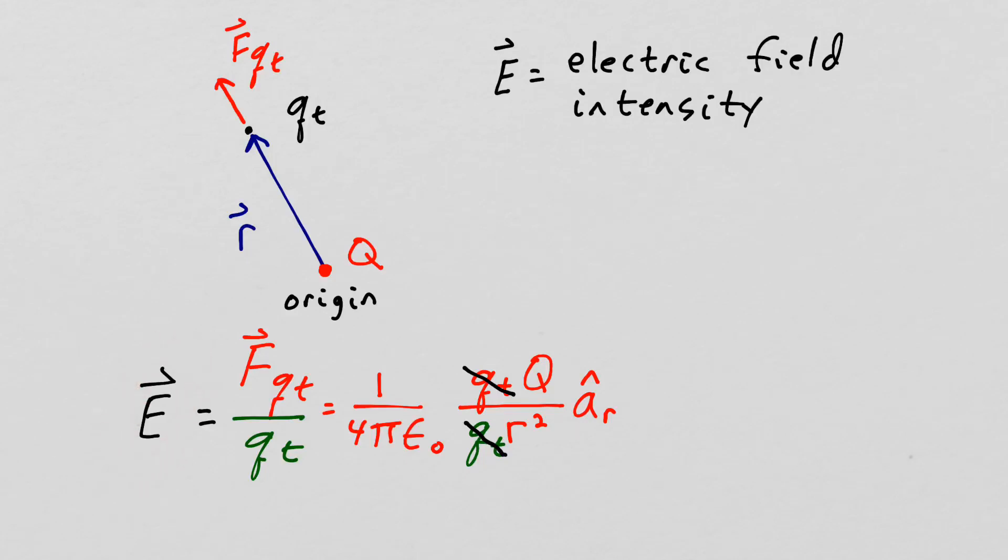E is what we call the electric field intensity and for point charge Q at the origin here is the expression for the electric field intensity.